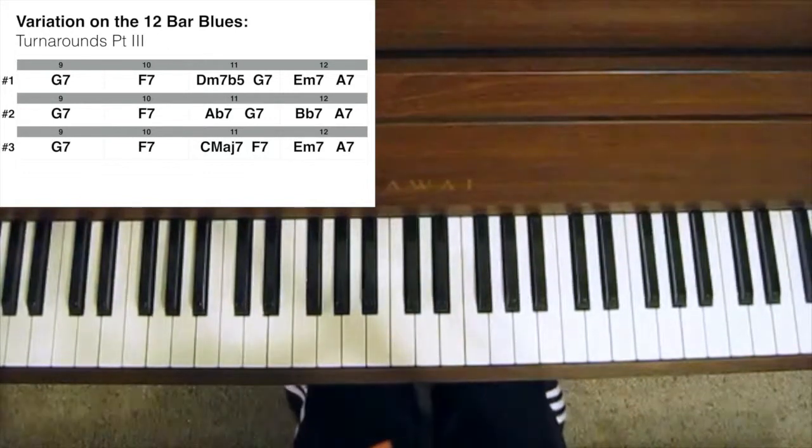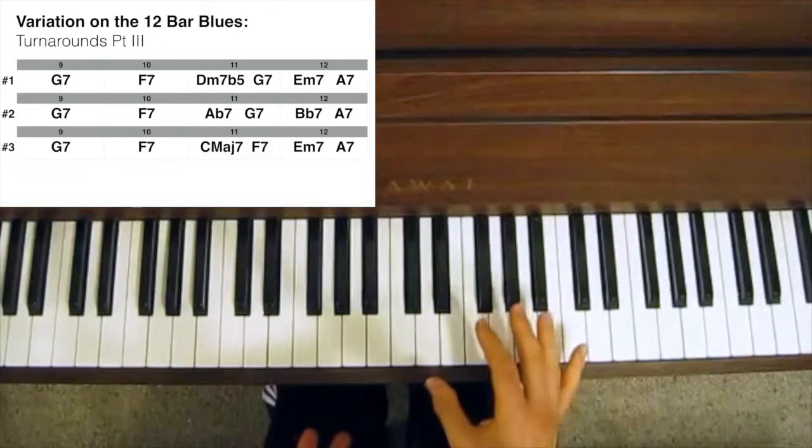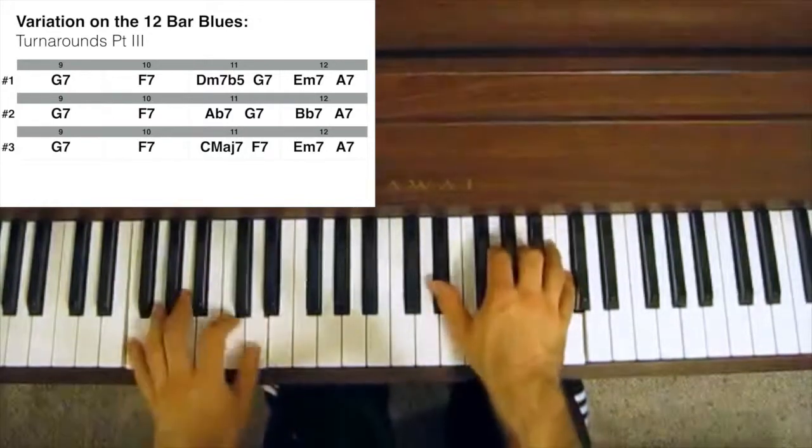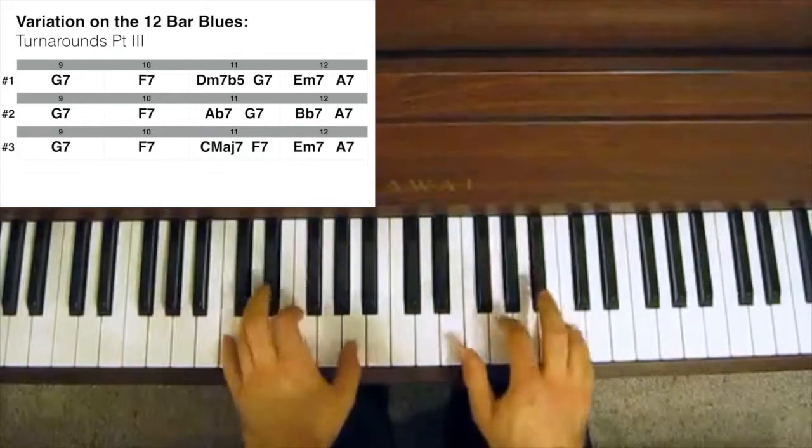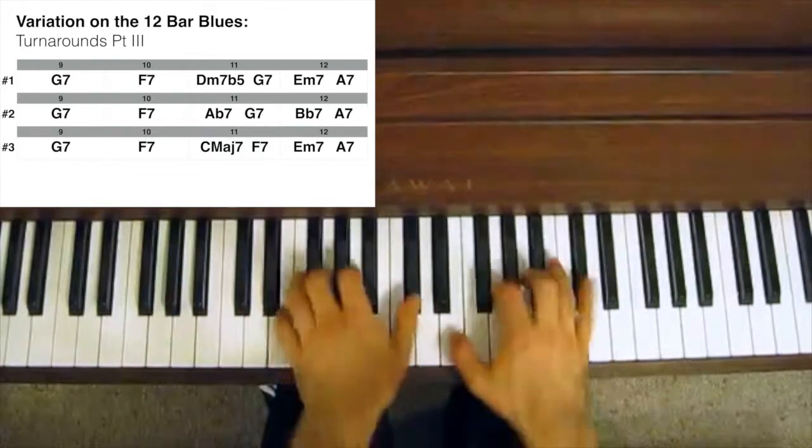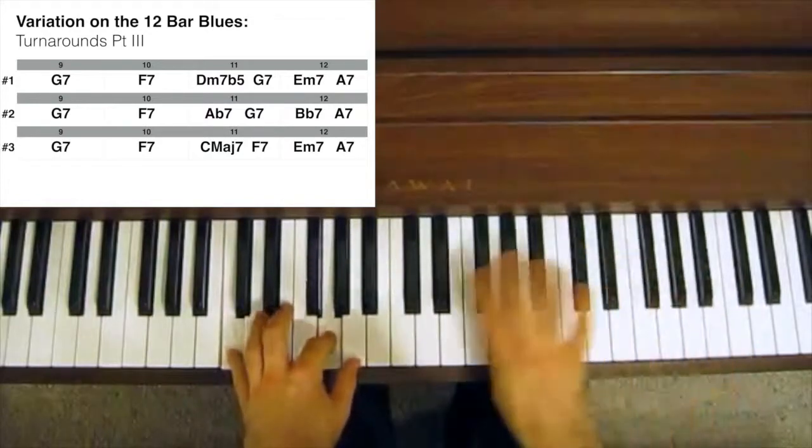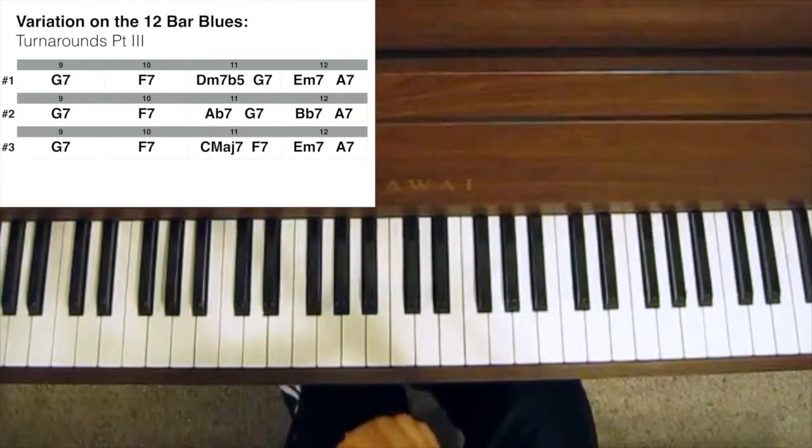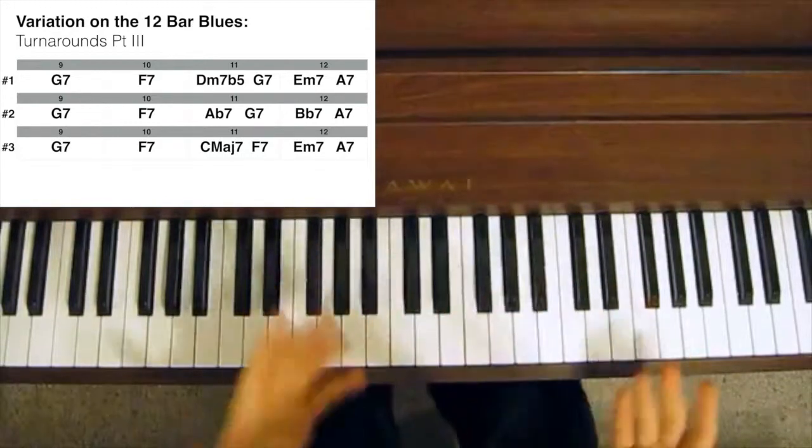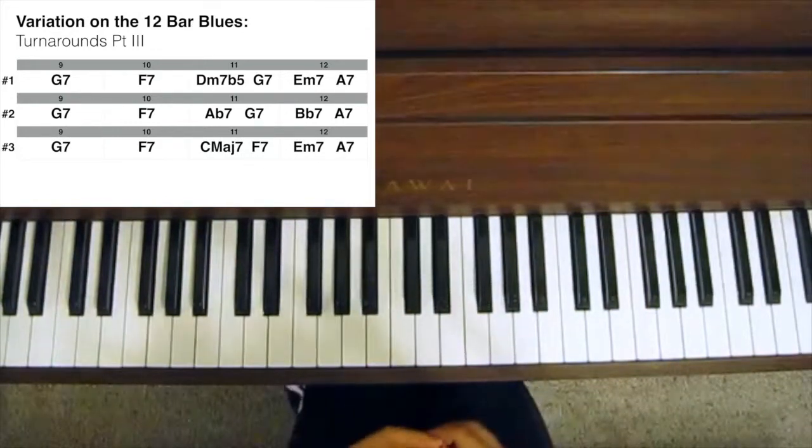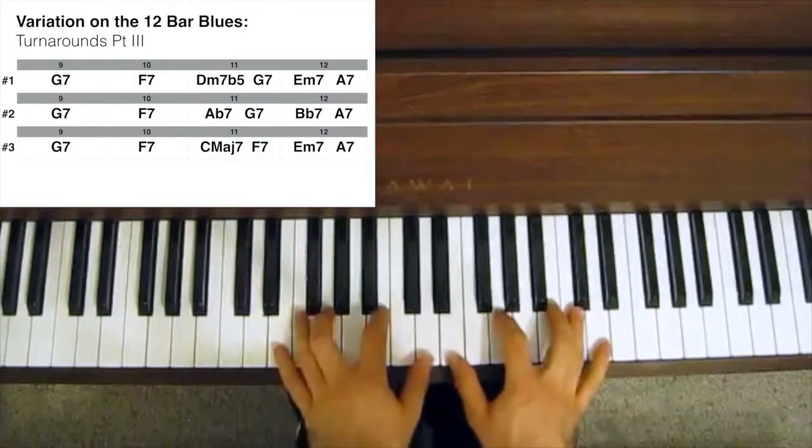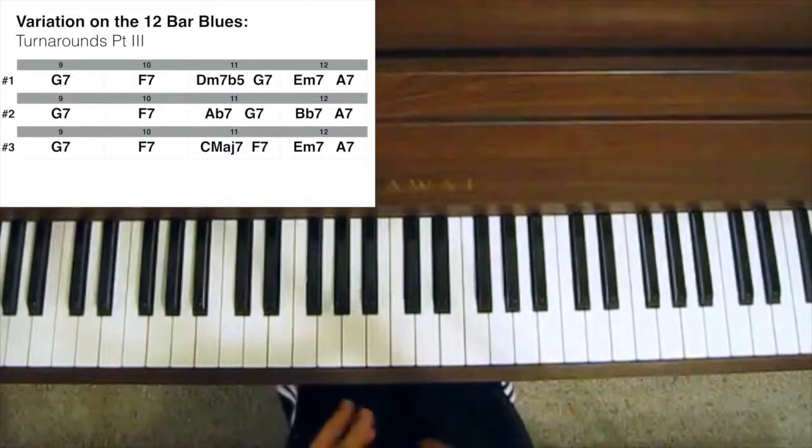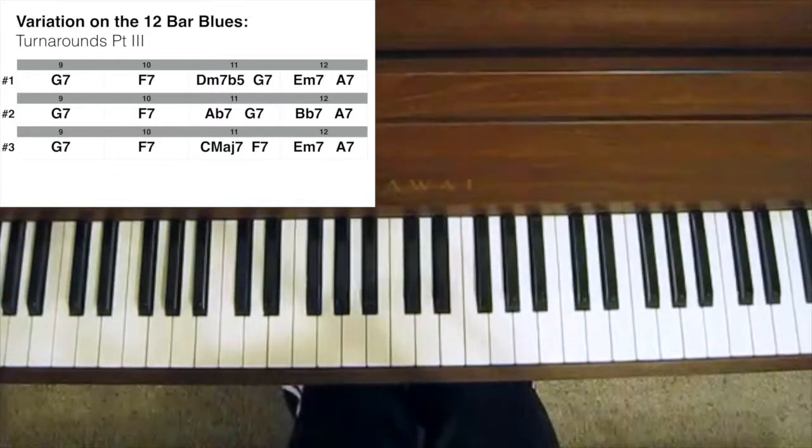So the last four bars of a 12-bar blues using that turnaround would sound something like this. So that is another sort of collection of turnarounds that you can use that sort of deviates a bit from the standard 3-6-2-5 or 1-6-2-5 that is sort of a bit of a cliché in the jazz world.